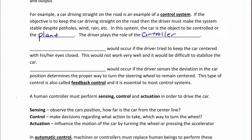Open loop control would occur if the driver decided to keep the car centered while her eyes were closed. This would not work well and it would be difficult to stabilize the car. Closed loop control would occur if the driver senses the deviation in the car position and determines the proper way to turn the steering to remain centered with eyes open. This type of control is called feedback control, where the eyes of the driver serve as the sensor.